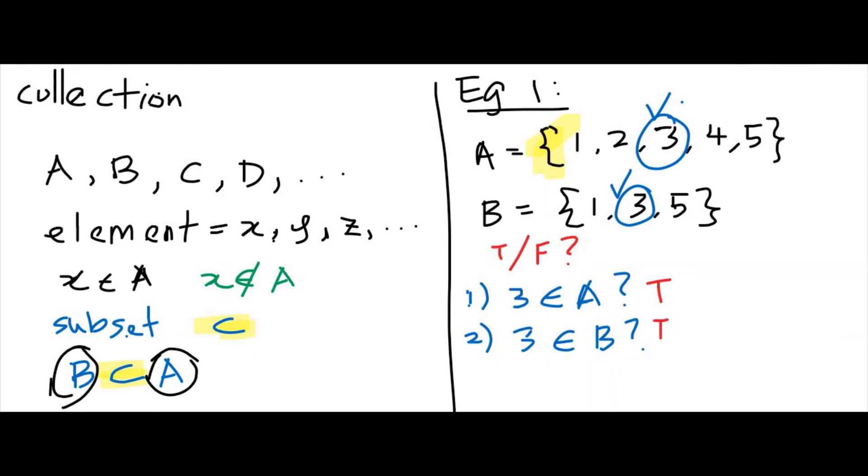Next question, question number three: is 7 an element of A? Let's see if 7 exists in A. Unfortunately there is no 7 in set A, therefore 7 is not an element of A. The answer is false.